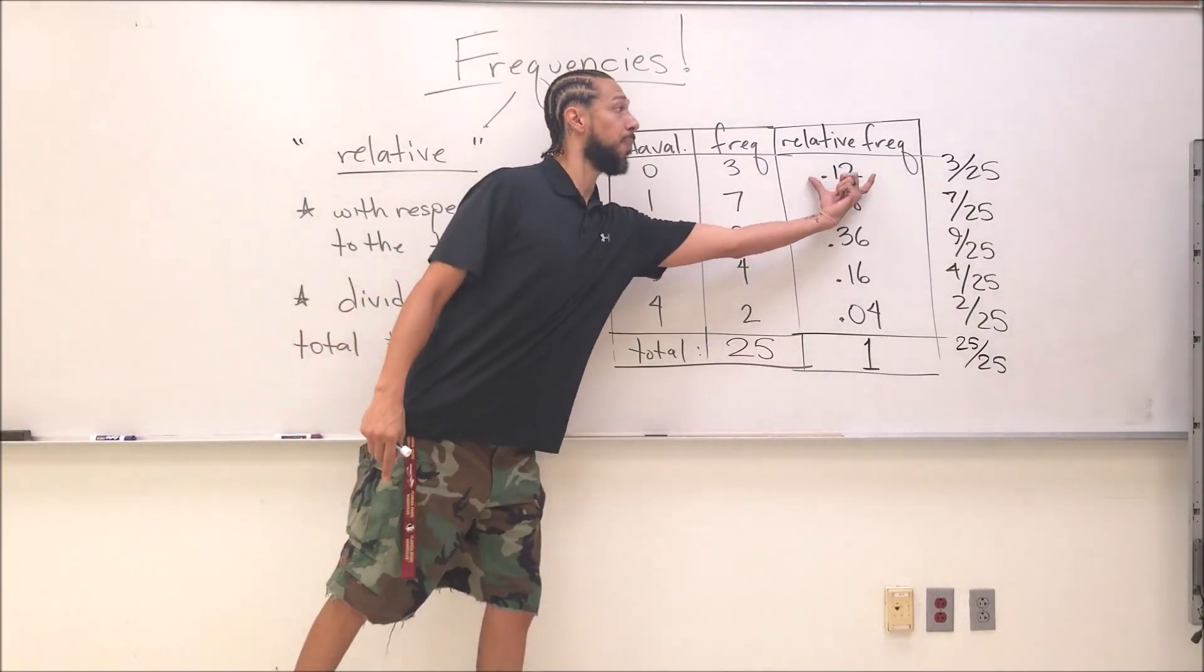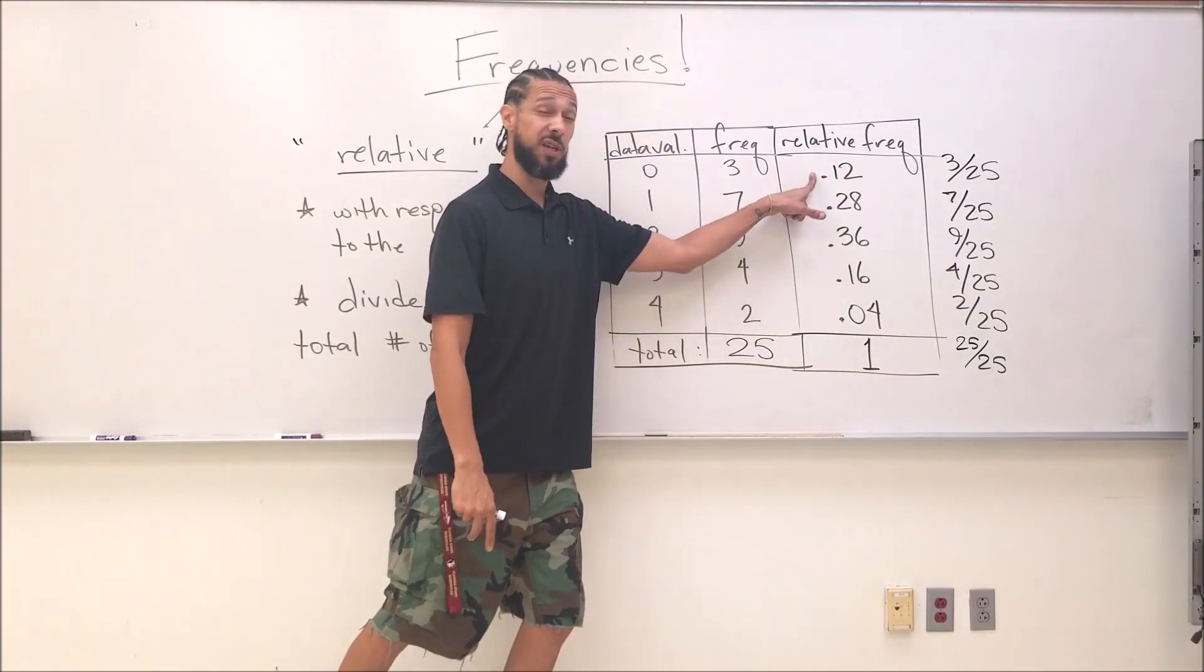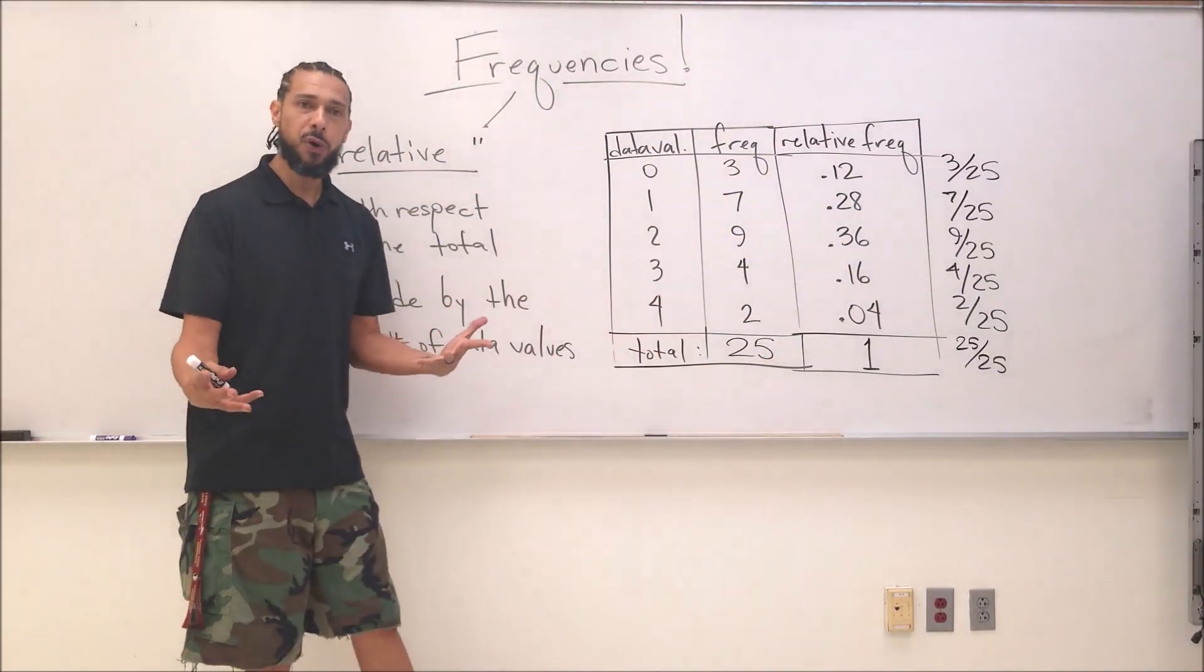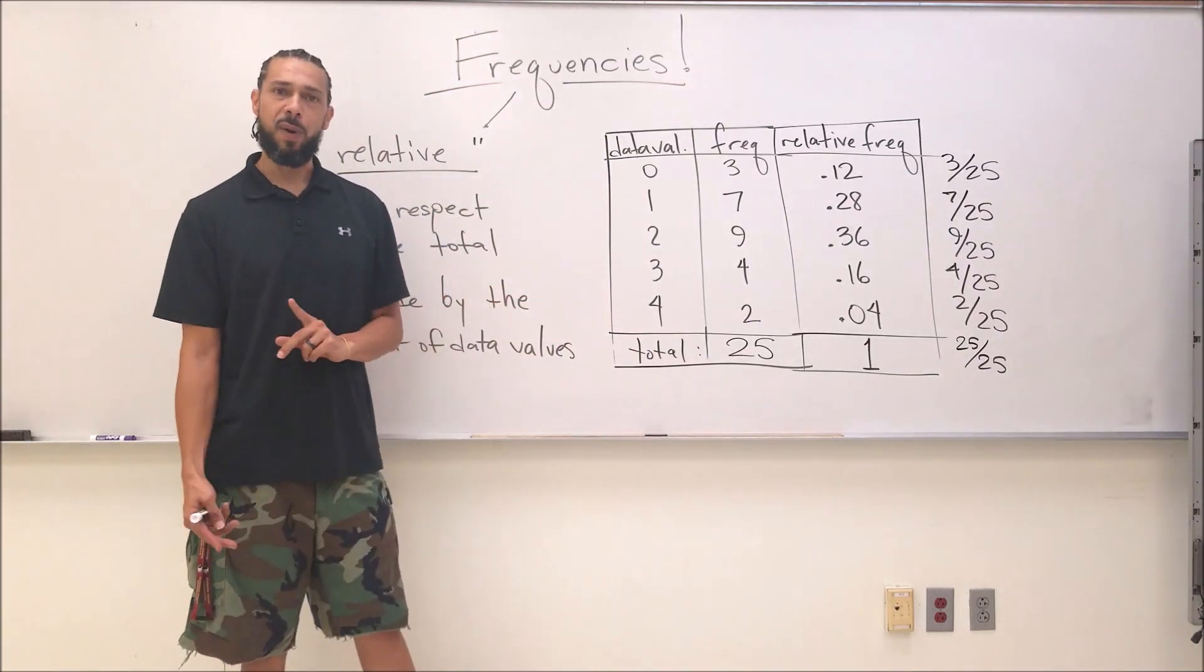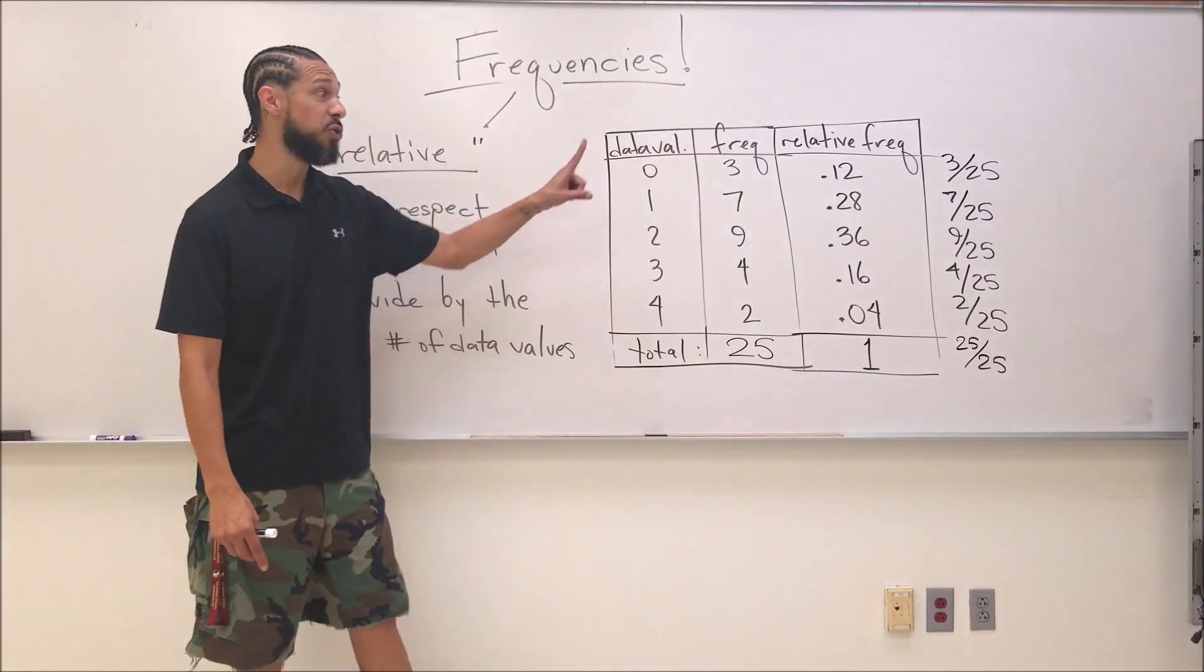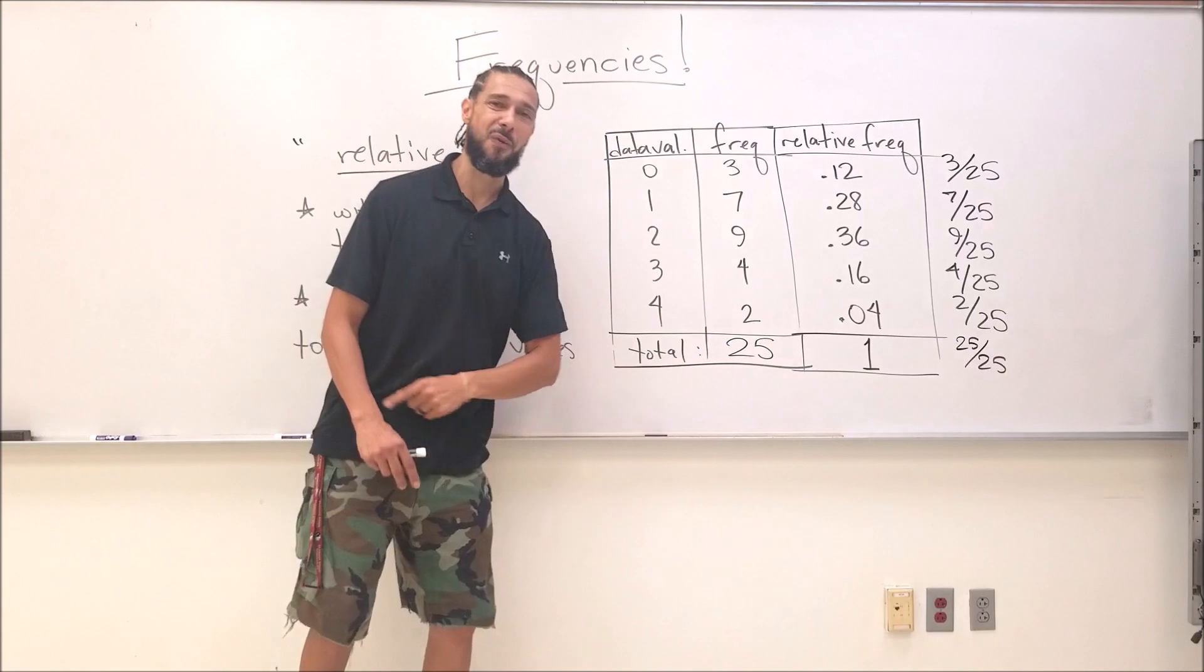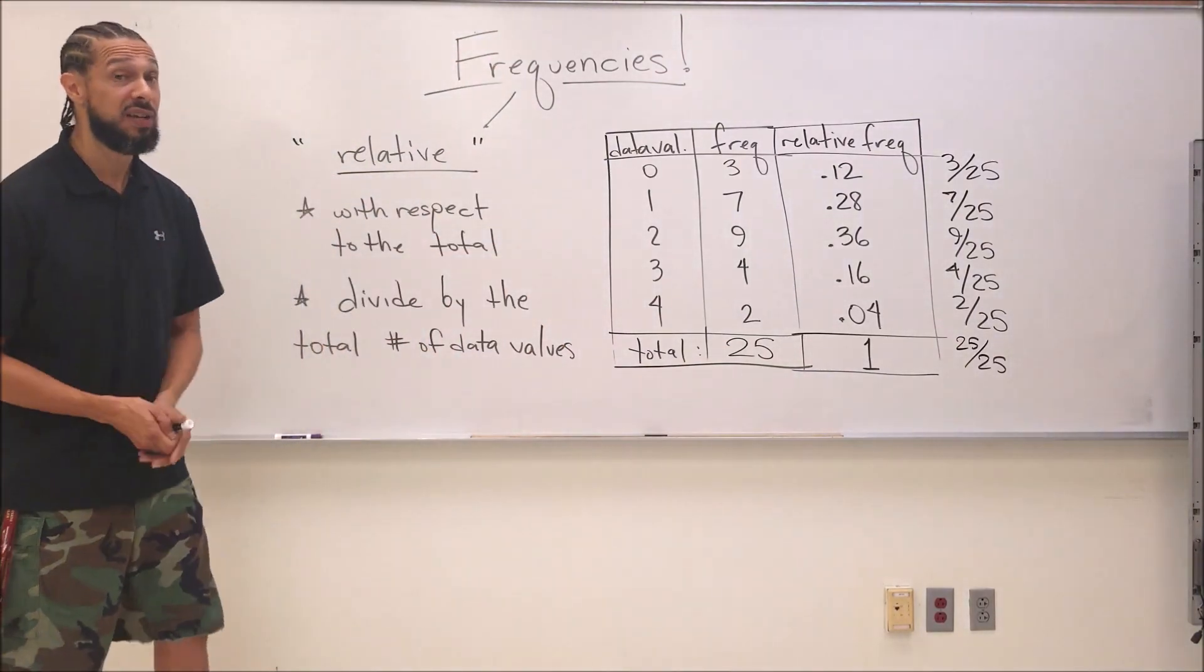If I added all those fractions together, keeping the denominator common, adding the numerators, 25 over 25 - isn't that the same as one? Yes. In summary, relative frequencies are calculated to give us the percentage or proportion of my data values that each individual one is responsible for. Zeros are responsible for 12%, ones for 28%, twos 36%, threes 16%, fours account for 4% of my data. Relative frequency, guys. Cumulative is next.